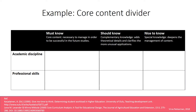Here you can see a core content divider in which the content is divided into must know, should know, and nice to know content. Sometimes the content is further divided into academic discipline and professional skills to make a more detailed analysis between knowledge and skills, as has been done with this core content divider.